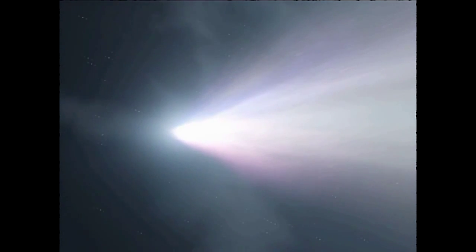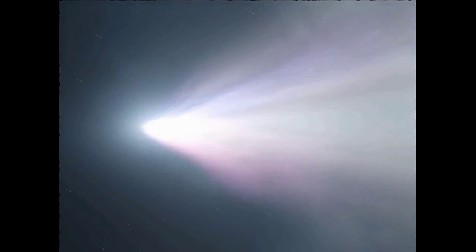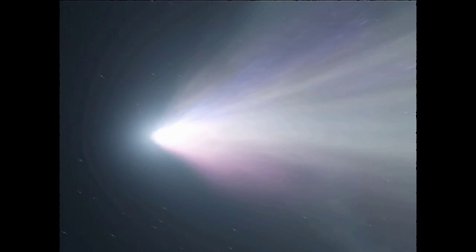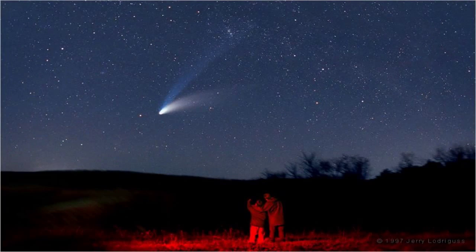Comets are more rare than meteors. There might be half a dozen comets visible each year, though they're usually faint enough to require a telescope to see really well. Every ten years, on average, a comet appears that's bright enough to be easily seen with the naked eye.